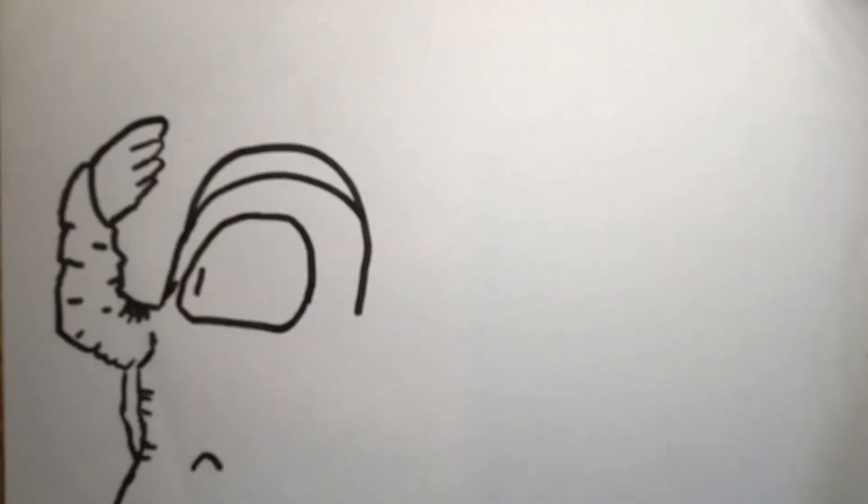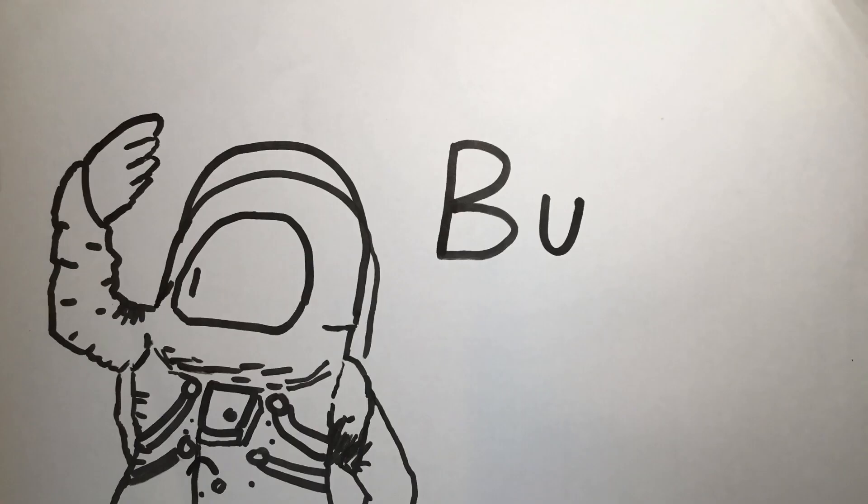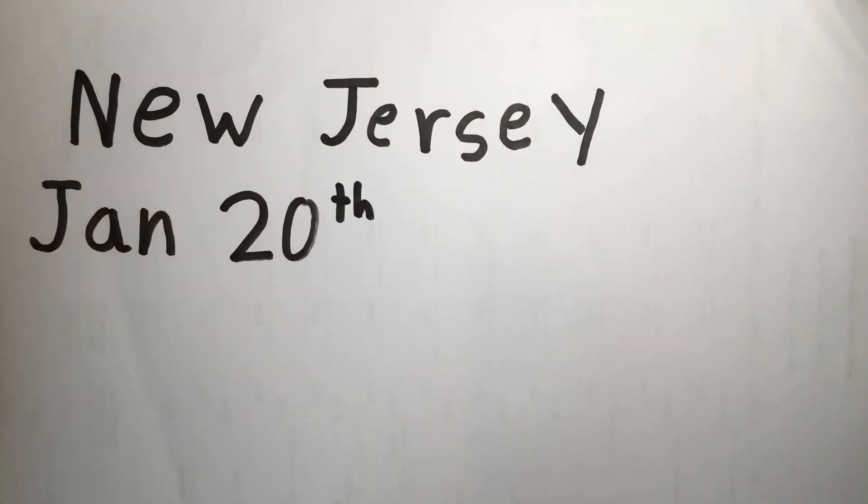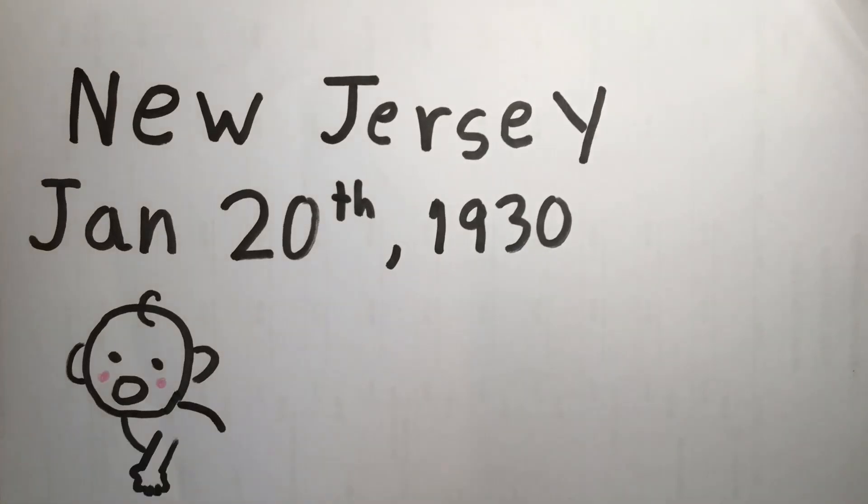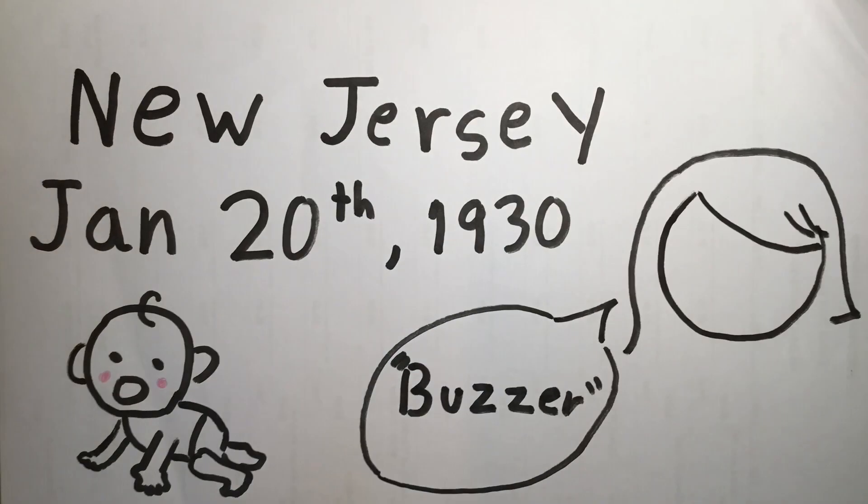The biography of Buzz Aldrin. Edwin E. Aldrin was born in New Jersey January 20, 1930. He got his nickname Buzz from his sister who mispronounced brother to buzzer.